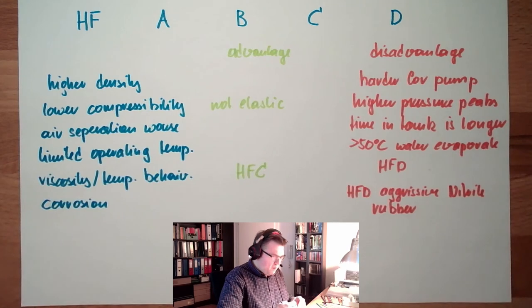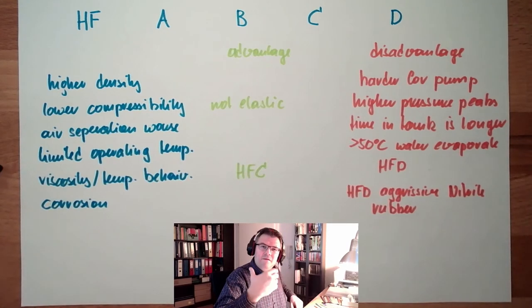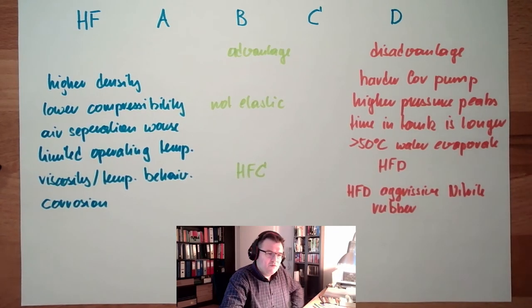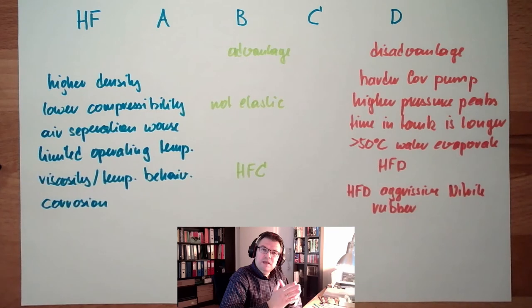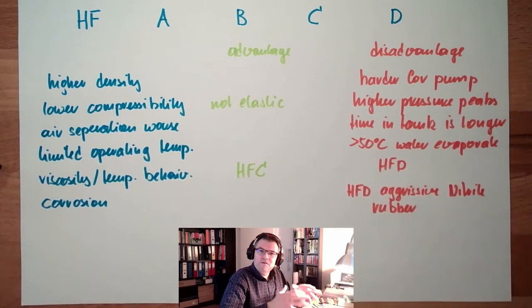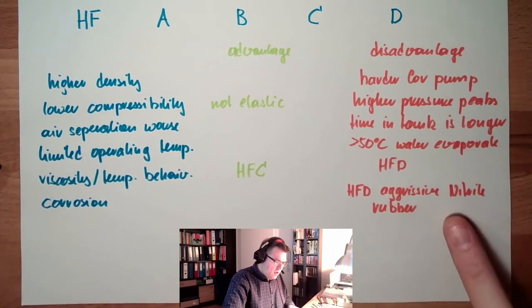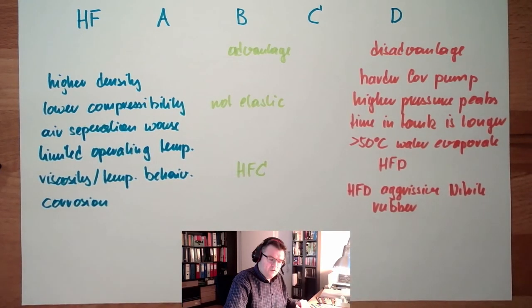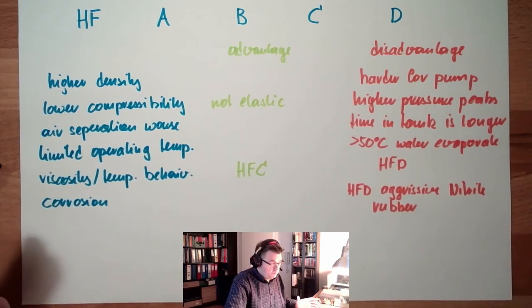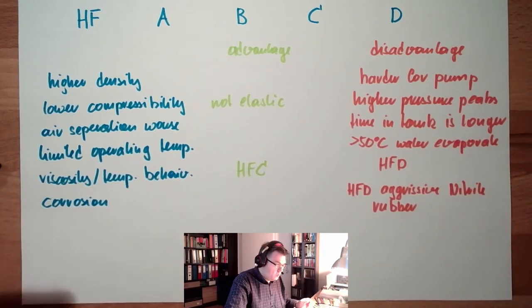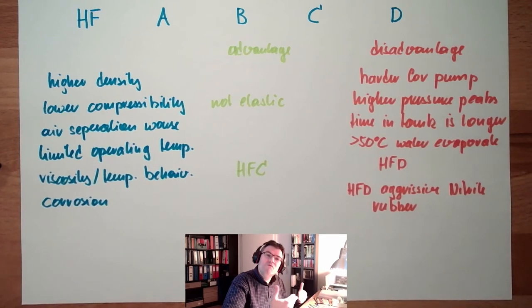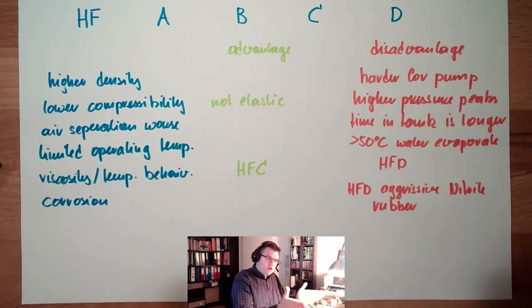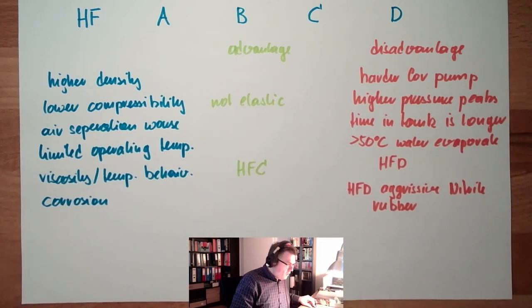You know nitrile rubber, probably under a trade name like Perbunan or something like this. Nitrile rubber is usually for sealing, hoses, bladders inside of pressure accumulators and so on. HFD is very aggressive and is dissolving this nitrile rubber. So you have to think about different sealing materials. Then my possibilities are narrowed down.